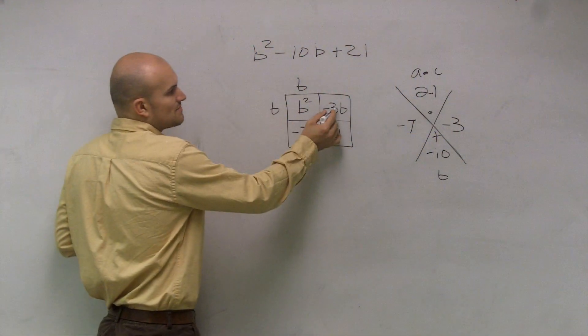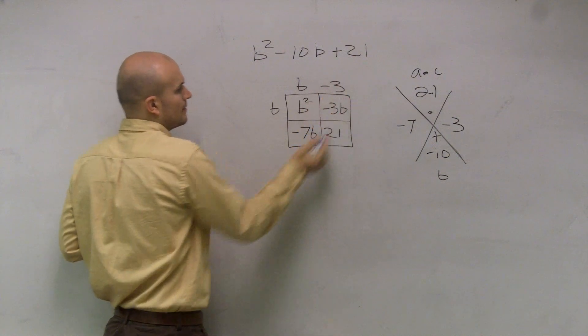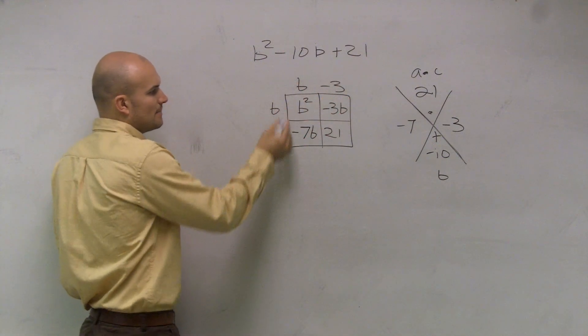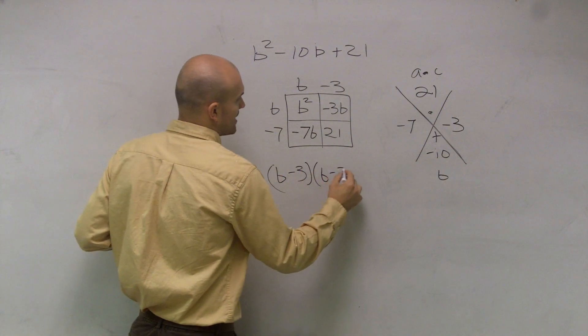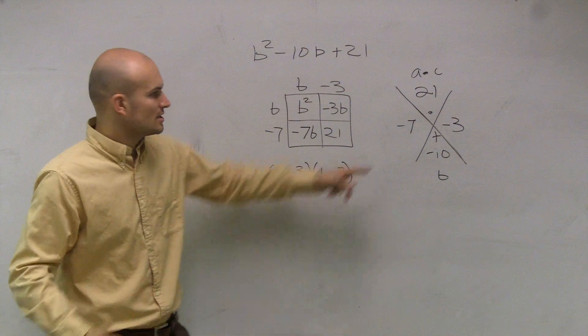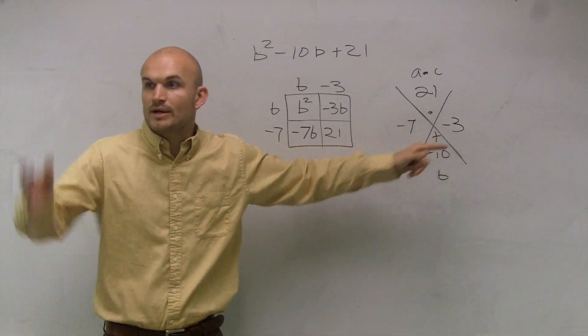So b times what gives you negative 3b? B times what gives you negative 7b? So I have b minus 7 and b minus 3 times b minus 7. And we worked on the shortcut of just taking these two answers from there.